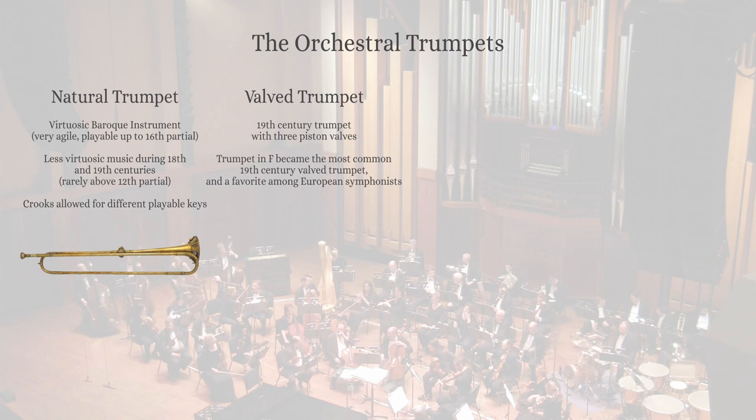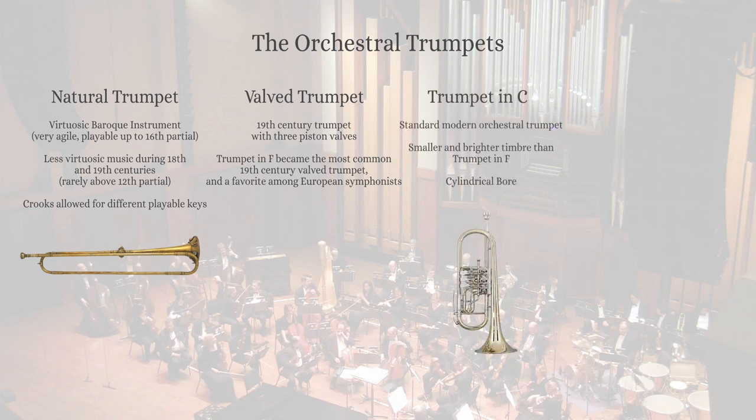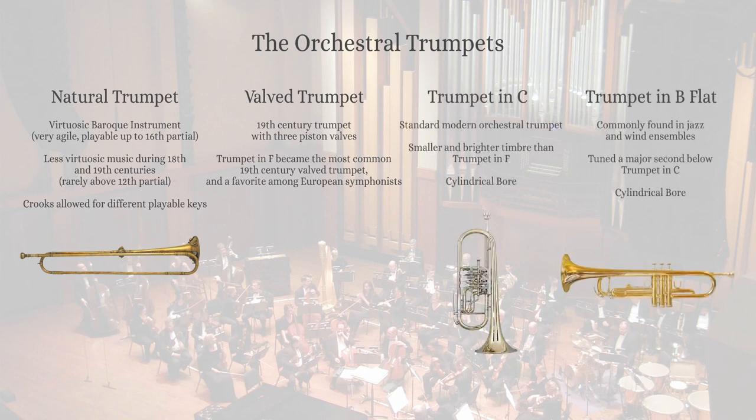As valved instruments were first adopted into the orchestra during the 19th century, the three-valved trumpet in F became an early favorite among composers. Into the 20th century, the smaller C and B-flat trumpets became more heavily favored, with the C trumpet used primarily in modern orchestras and the B-flat trumpet favored in wind and jazz ensembles. Both the modern C and B-flat trumpets have three piston valves and cylindrical bores.